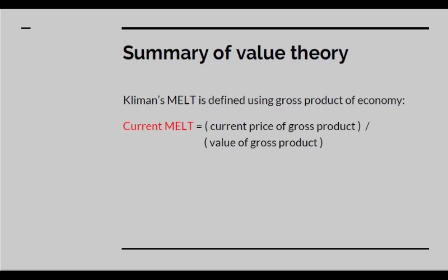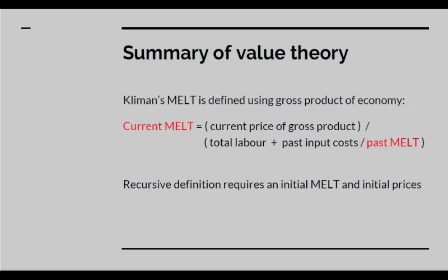Kliman's MELT itself is recursively defined. He says the MELT is equal to the current price of the gross product divided by the value of the gross product. The idea of the MELT wasn't Kliman's — other economists had proposed it — but this particular interpretation is Kliman's own. When we expand the term 'value of the gross product,' it becomes recursively defined: total input labour plus past input costs divided by past MELT. So we have a recursive definition of the MELT in terms of the MELT. In order to fix it, you need to know an initial MELT and initial prices, making this an incomplete formulation.